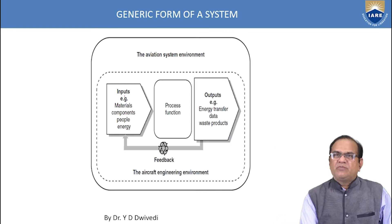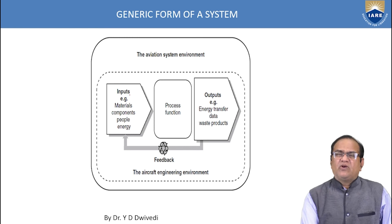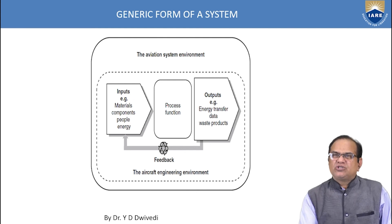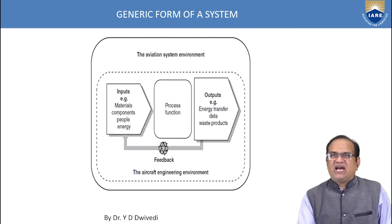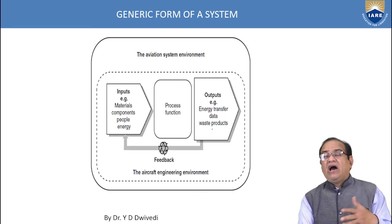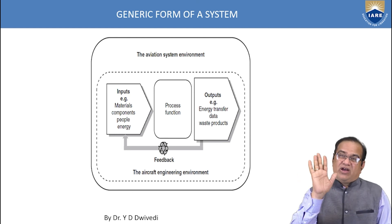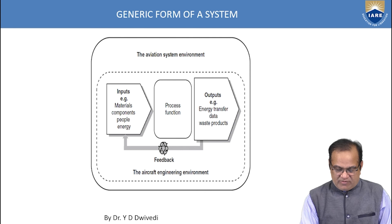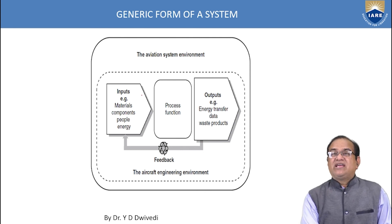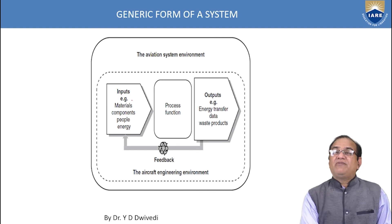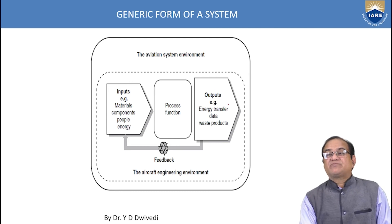In the generic system diagram: input consists of materials, components, people, and energy — these go to a process, after which we get output. Output may be a transfer of energy, transfer of data, waste product, or movement such as lowering landing gears, retracting and extending them. We must have feedback so the input can be varied and the whole system can be automated to vary the input if the output is not achieved as required.